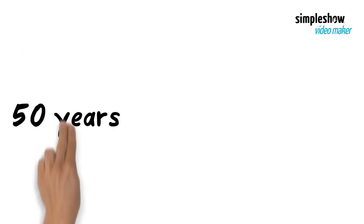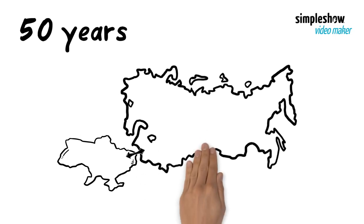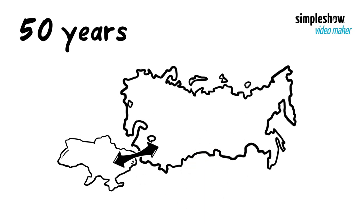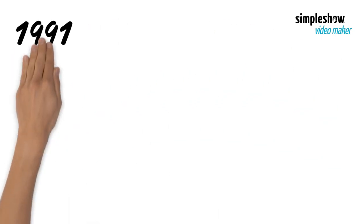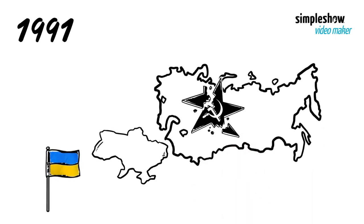For nearly half a century after this, Ukraine remained part of the USSR. In 1991, with the collapse of communism in Soviet Russia, Ukraine finally became independent.